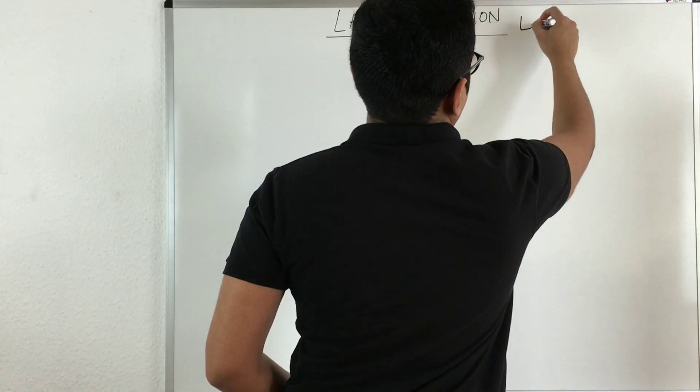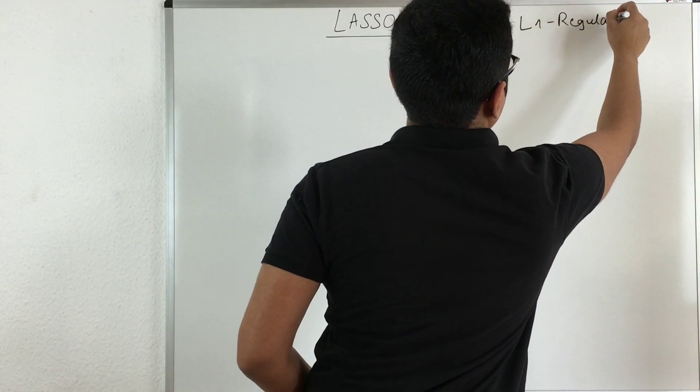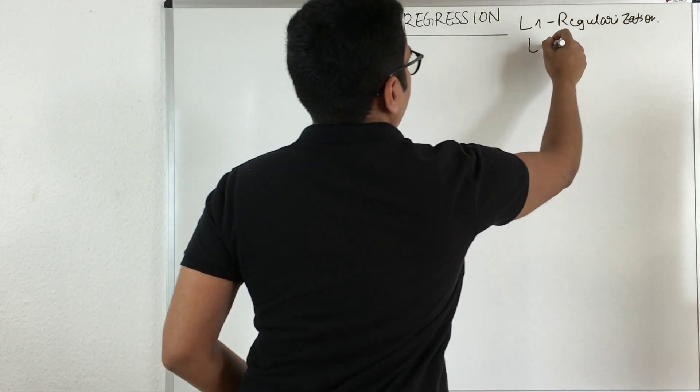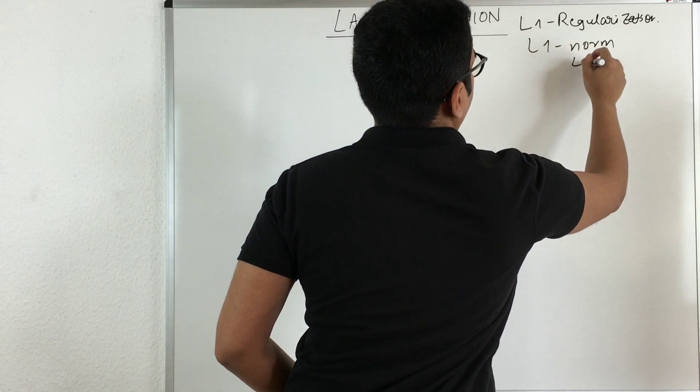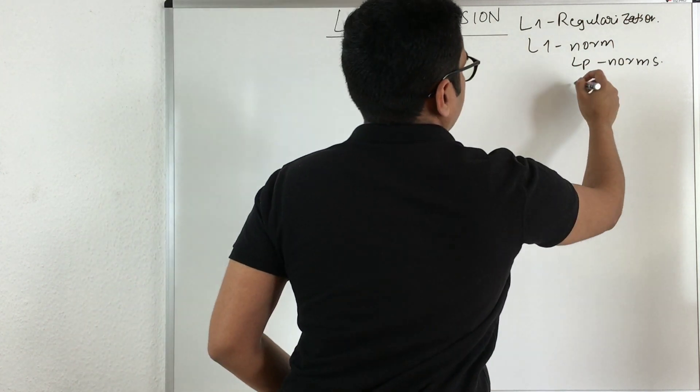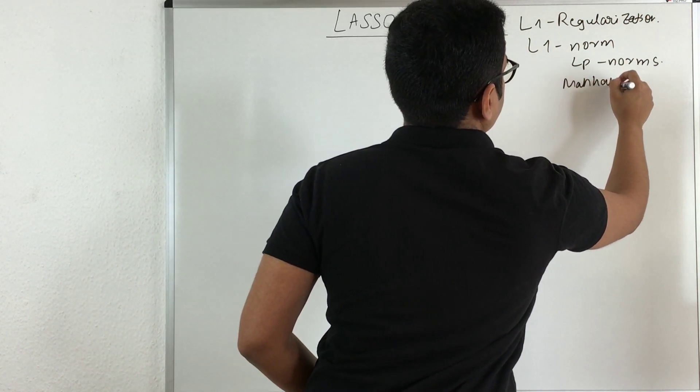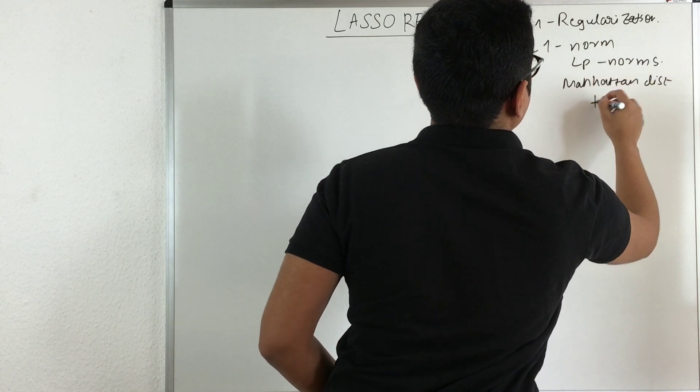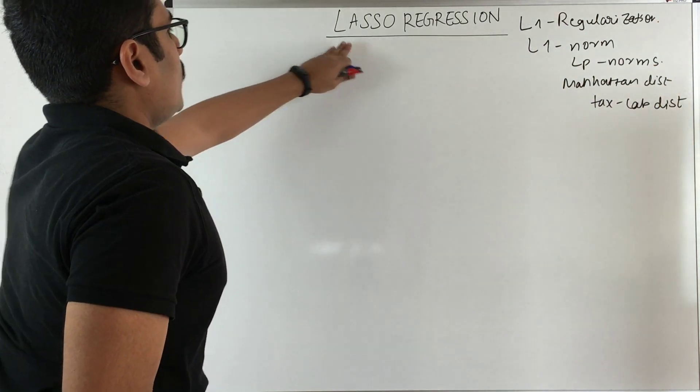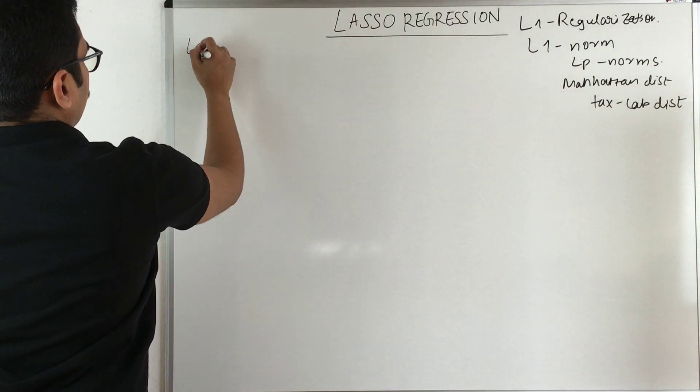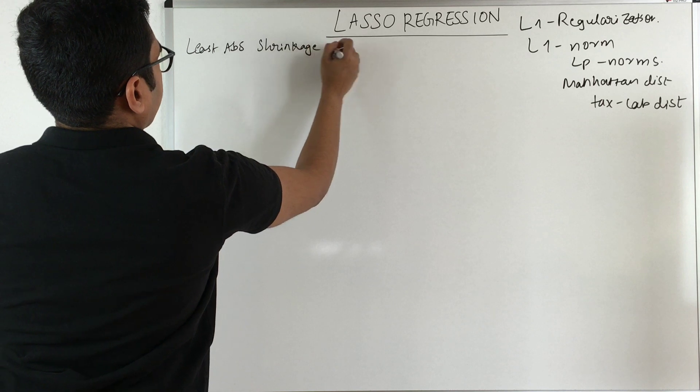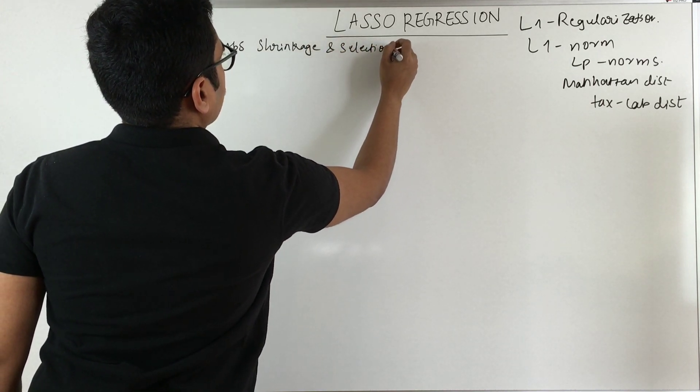Lasso regression is also called L1 regularization, because it follows the L1 norm out of the LP norms. L1 norm is nothing but your Manhattan distance or taxi cab distance. The lasso in lasso regression stands for least absolute shrinkage and selection operator.